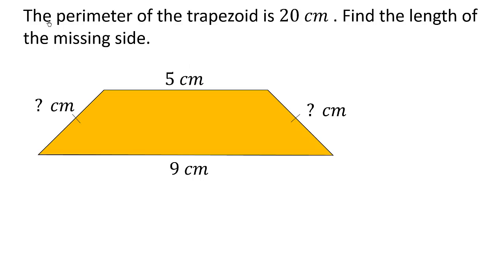Hello, please let's look at this mathematics question on perimeter. The perimeter of the trapezoid is 20 centimeters. Find the length of the missing side. Recall that perimeter means the distance around the figure. So one way we can solve this question is adding all these distances and equating it to the given perimeter which is 20 centimeters.